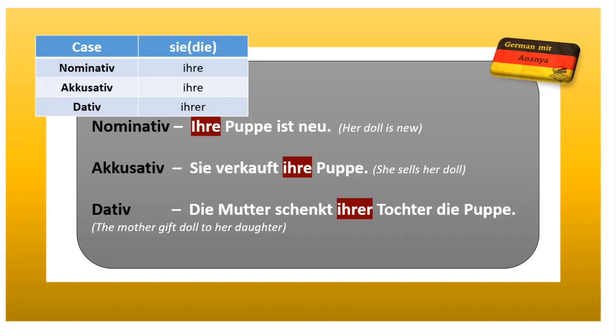Next, 'sie' which means she. The forms are: ihr, ihr, ihrer. Sentences — nominative: 'Ihre Puppe ist neu' — her doll is new. Accusative: 'Sie verkauft ihre Puppe' — she sells her doll. Dative: 'Die Mutter schenkt ihrer Tochter die Puppe' — the mother gifts the doll to her daughter. So 'ihrer Tochter' is the possessive pronoun in the dative case.